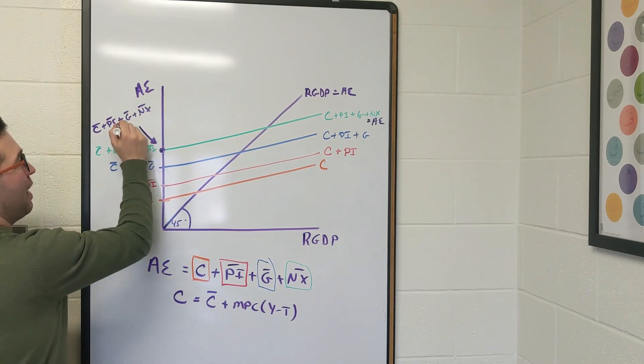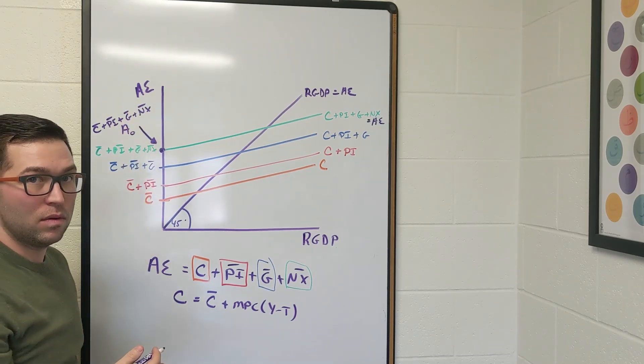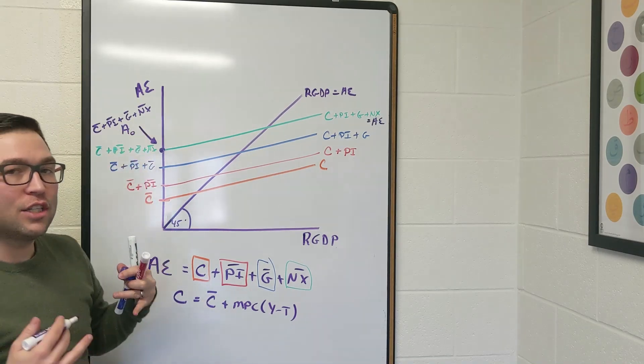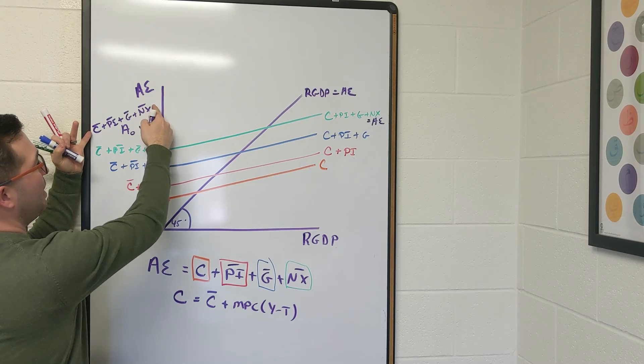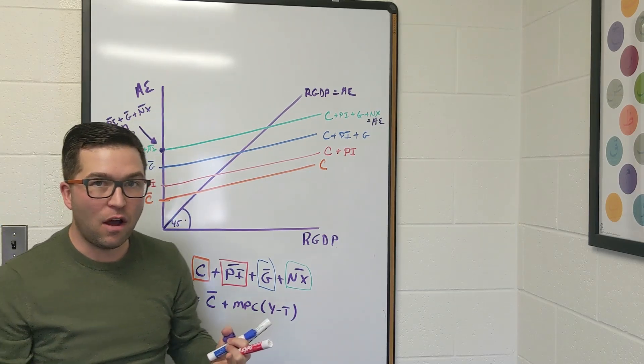Where it starts right here is that C bar plus PI bar plus G bar plus NX bar. We're going to label that A sub zero, and we're going to call that autonomous spending. It's the part of aggregate expenditure that does not depend on real GDP.